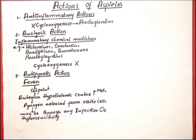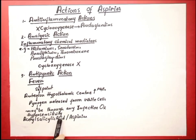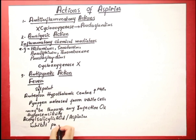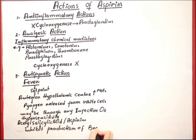Acetyl salicylate, or aspirin, acts as an antipyretic because of its ability to interfere with the production of brain prostaglandin E2. Aspirin inhibits the production of prostaglandin E2 within the brain, and in this way aspirin helps us get relief from fever and acts as an antipyretic agent.